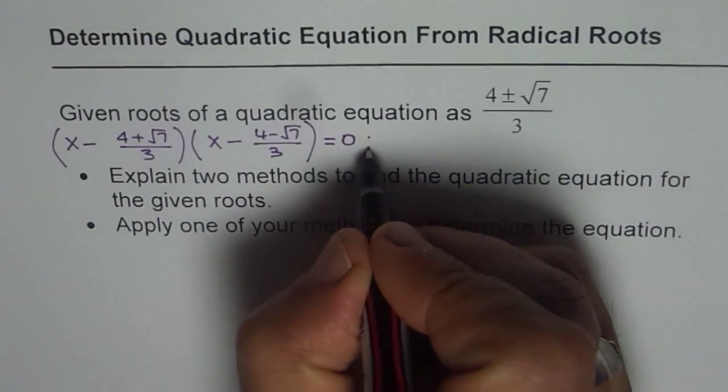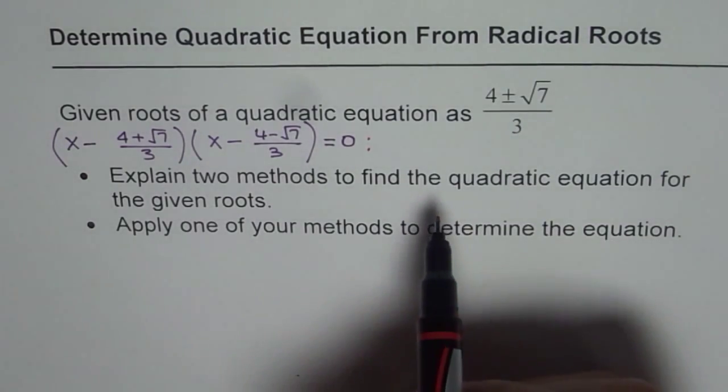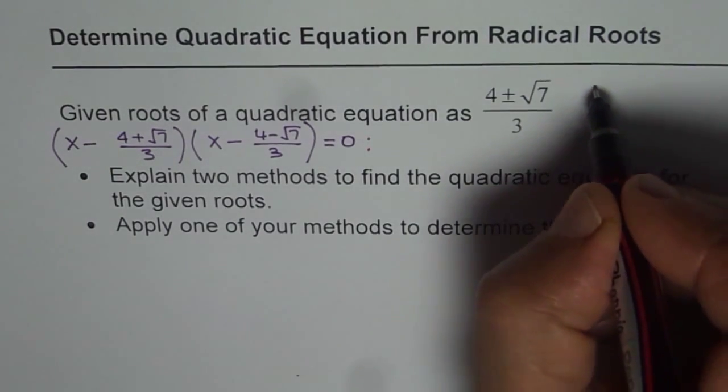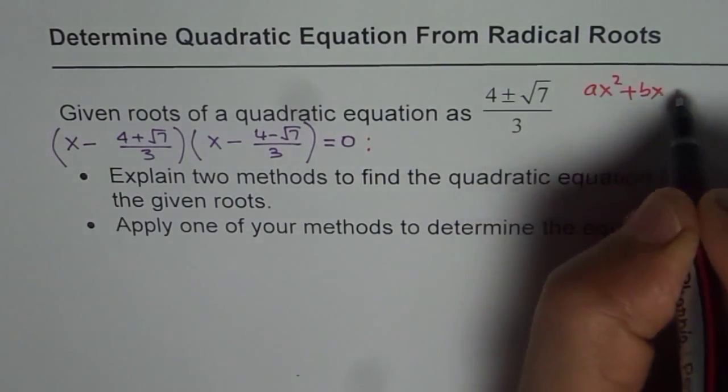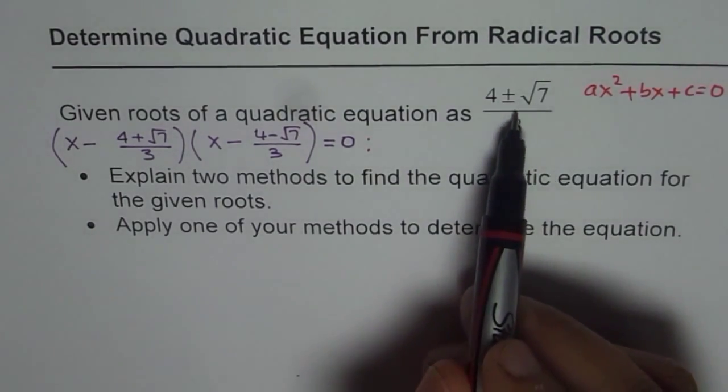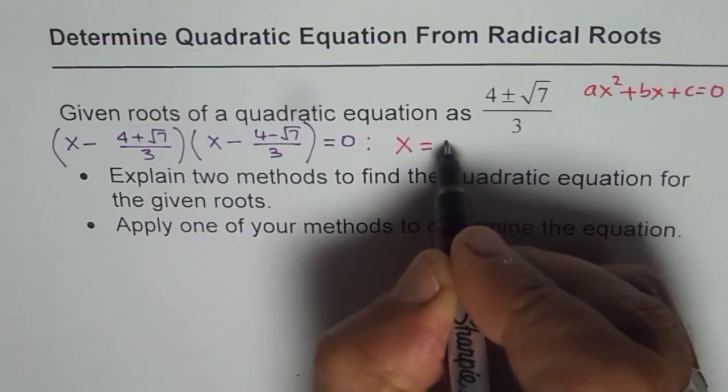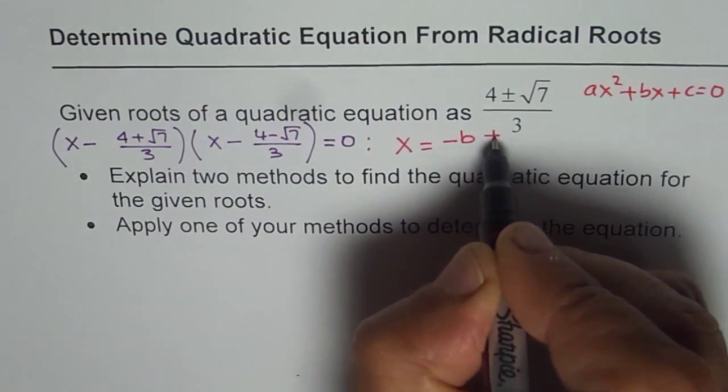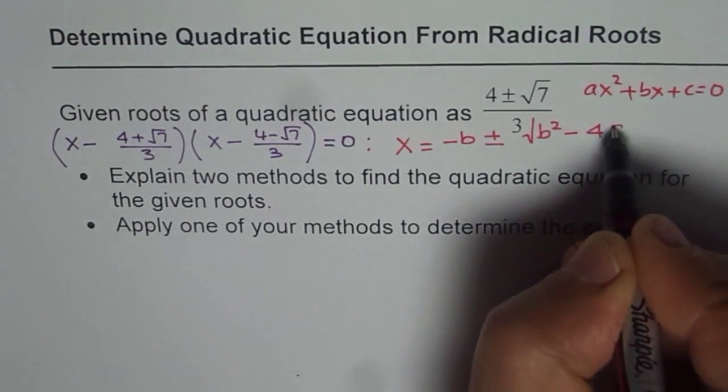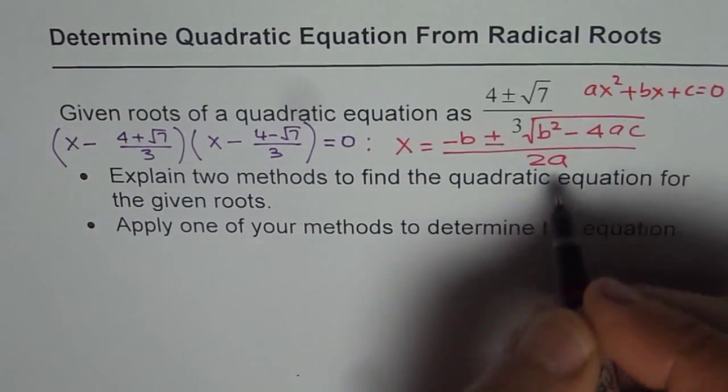The other method is a very interesting approach. When we are trying to find a quadratic equation in the form of ax squared plus bx plus c equals 0, how is this related with the equation? It is x equals minus b plus and minus square root of b squared minus 4ac divided by 2 times a. That is the relation.